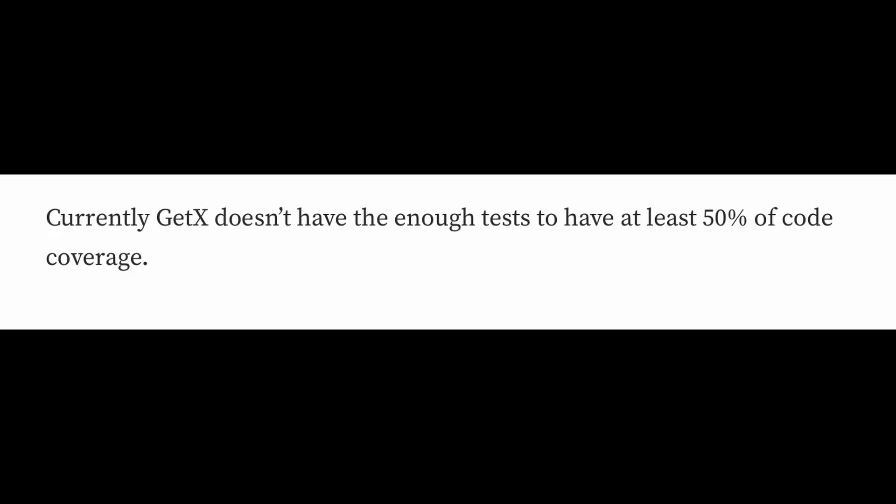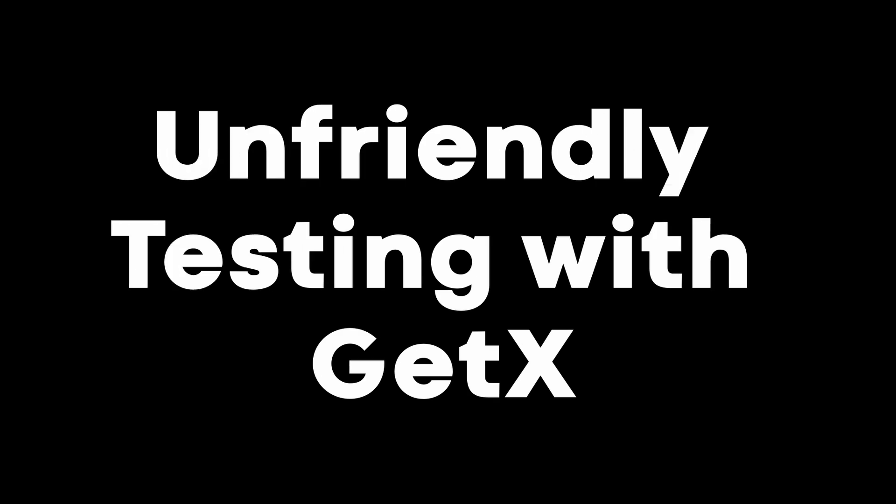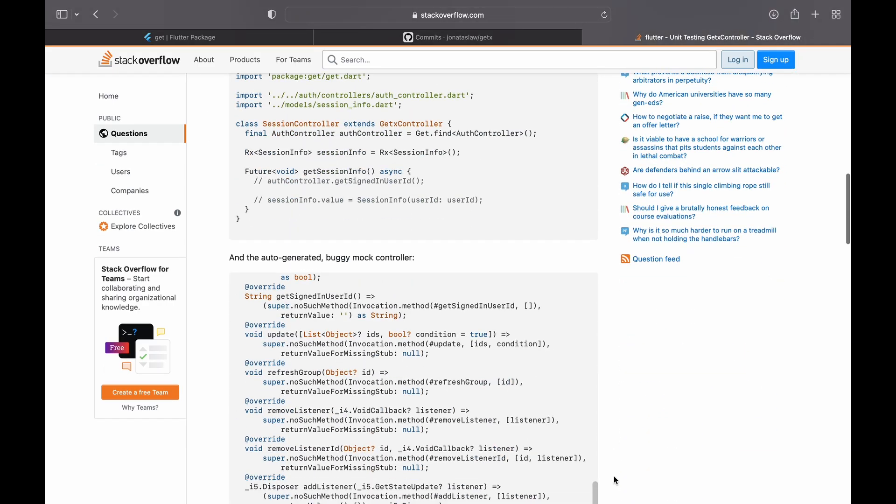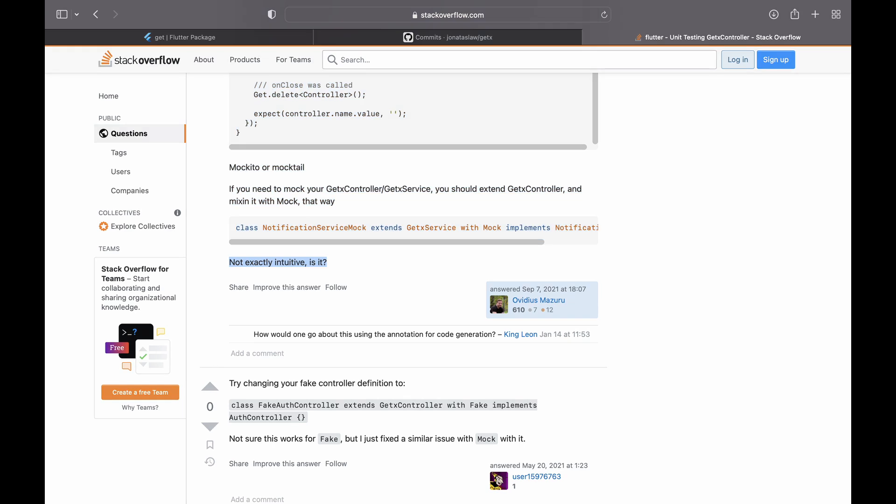The sixth disadvantage is less test coverage in the GetX package. Test coverage means what percentage of the app code is tested — there's less than 50% coverage in the package, while 80% is considered good coverage. This means tests for 700-plus API elements still need to be written. Talking about testing, the seventh disadvantage is that testing is not friendly with GetX, be it unit testing or widget testing. As one developer noted, it's not intuitive, and it's also a waste of time if similar errors keep repeating.